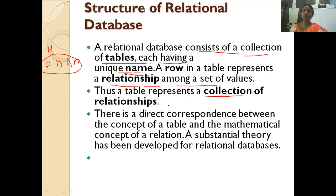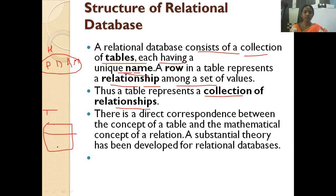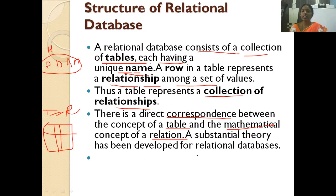A table represents a collection of relationships. There is a direct correspondence between the concept of a table and the mathematical concept of a relation. A table consists of a set of rows and columns. In your set theory studies, you have sets and relations — the same operations you perform on sets can be performed on a table. That is why in RDBMS, we call a table a relation.